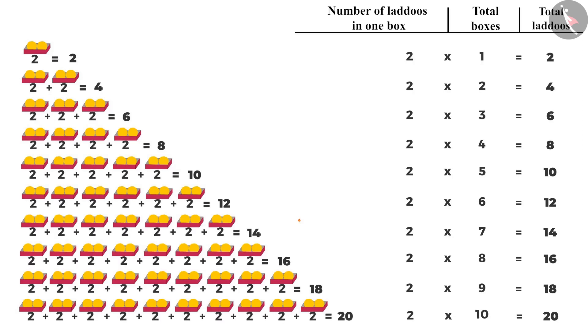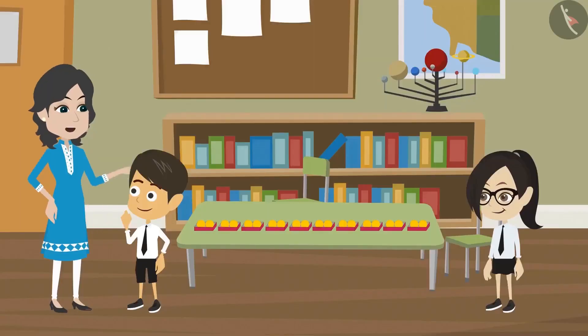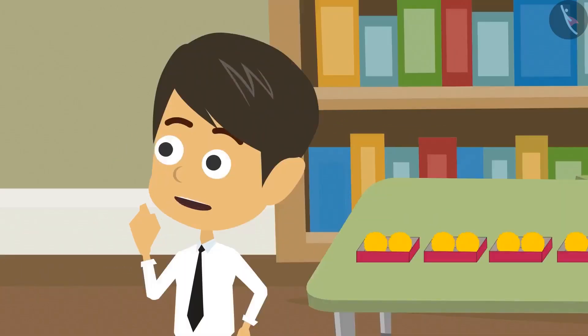It is easier to multiply 2 numbers than adding the same number again and again. Yes, that is why it is very important to memorize the tables. Otherwise, you have to use a pen and paper even for simple calculations. What are tables?